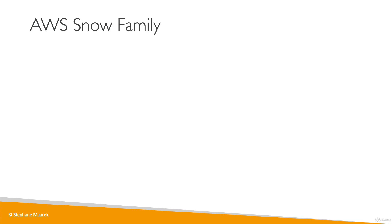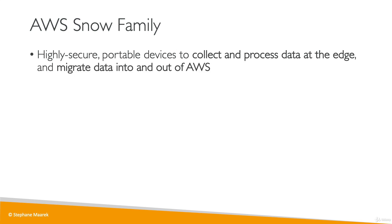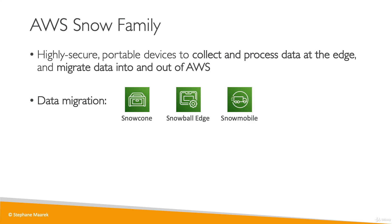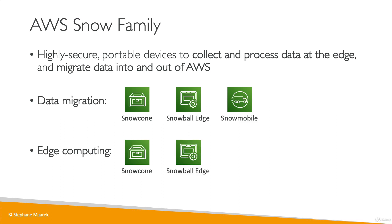Let's talk about the AWS Snow family. It represents a highly secure portable device with two use cases within AWS: either collecting and processing data at the edge, or migrating data in and out of AWS. For data migration, we have three device types — Snow Cone, Snowball Edge, and Snowmobile. For Edge Computing, we have Snow Cone and Snowball Edge. We'll first tackle data migration, then Edge Computing.